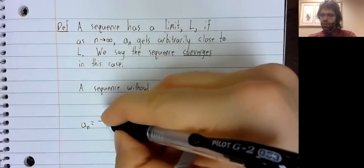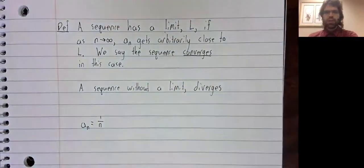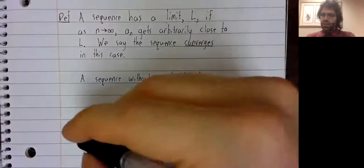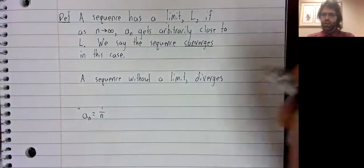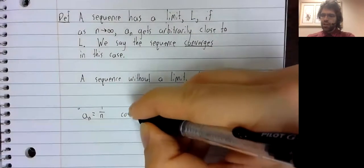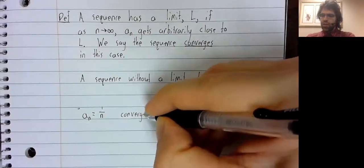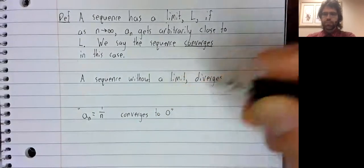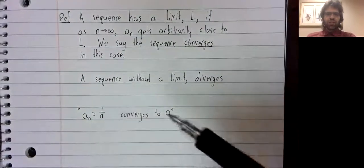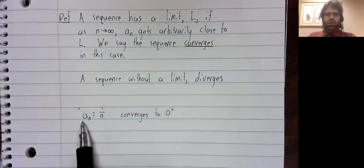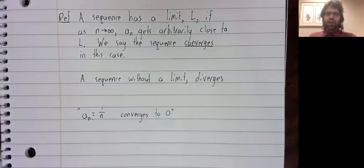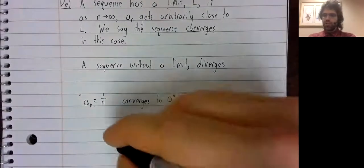And we frequently allow ourselves to be a little sloppy with our notation and say things like a sub n equals one divided by n converges to zero. And what makes this notation sloppy is that this is not a sequence, it's a rule. It's a rule that tells you how to compute the entries of a sequence.